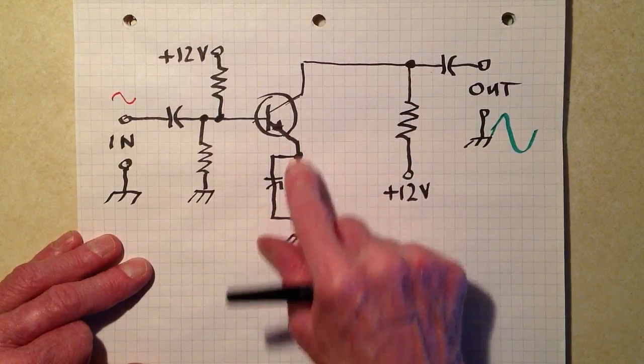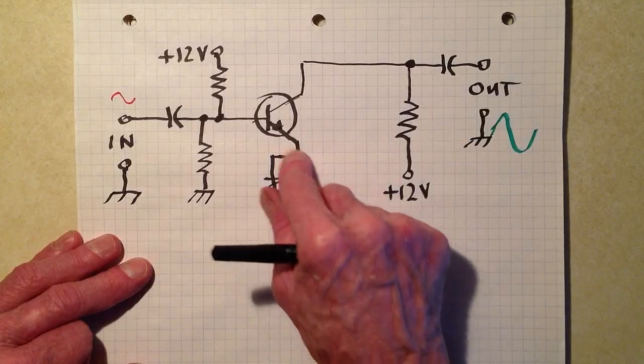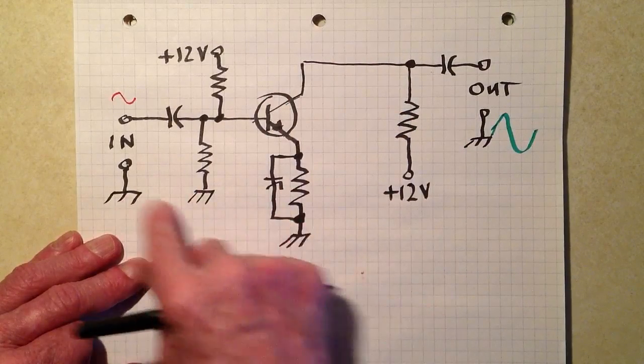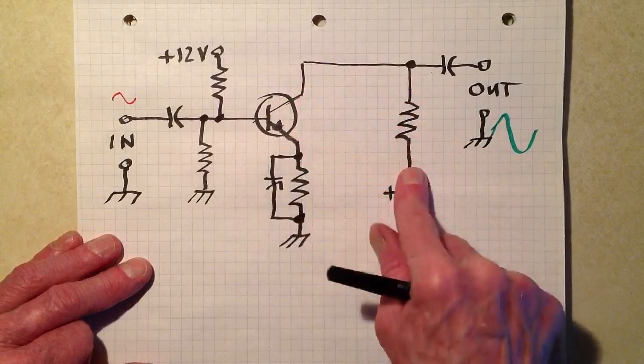Electrons going, remember electrons go from minus to plus. This is in effect the negative ground here, electrons flowing through like that.